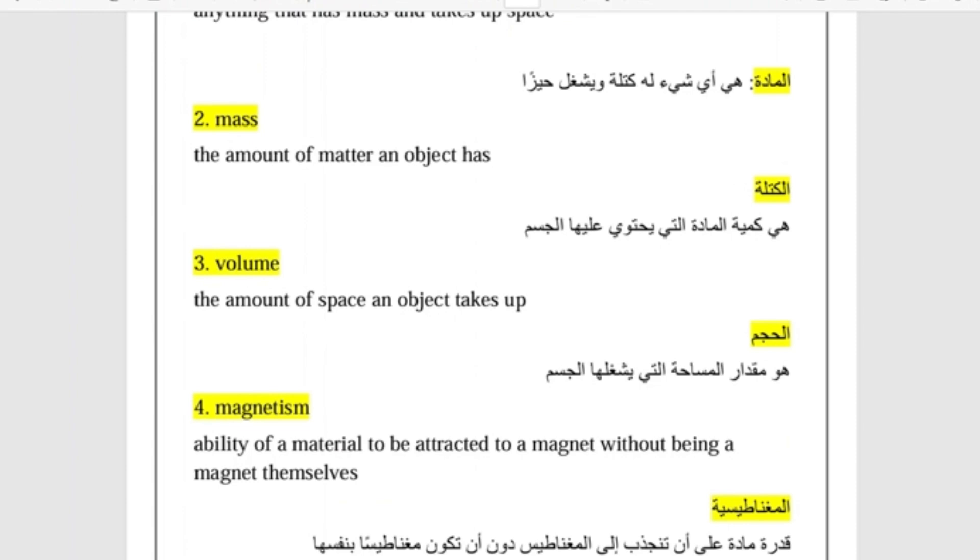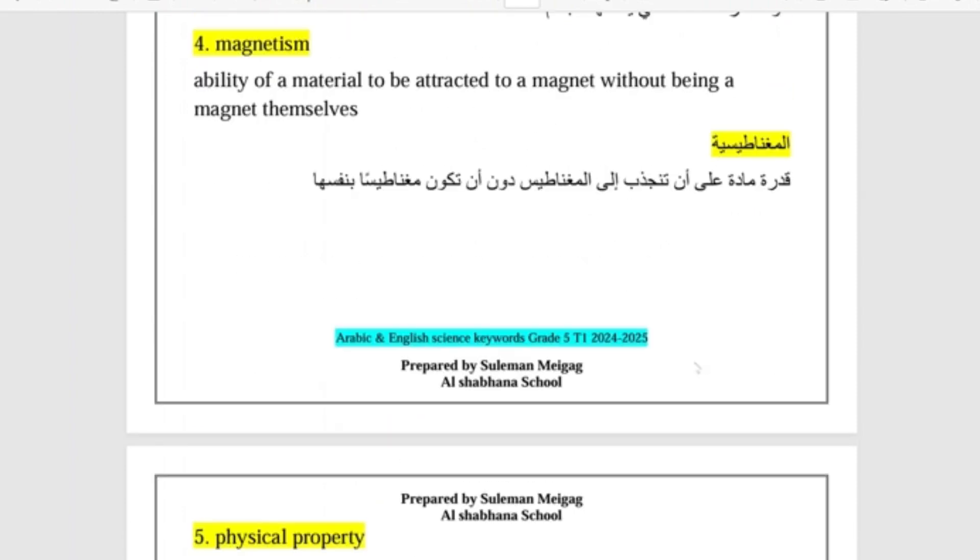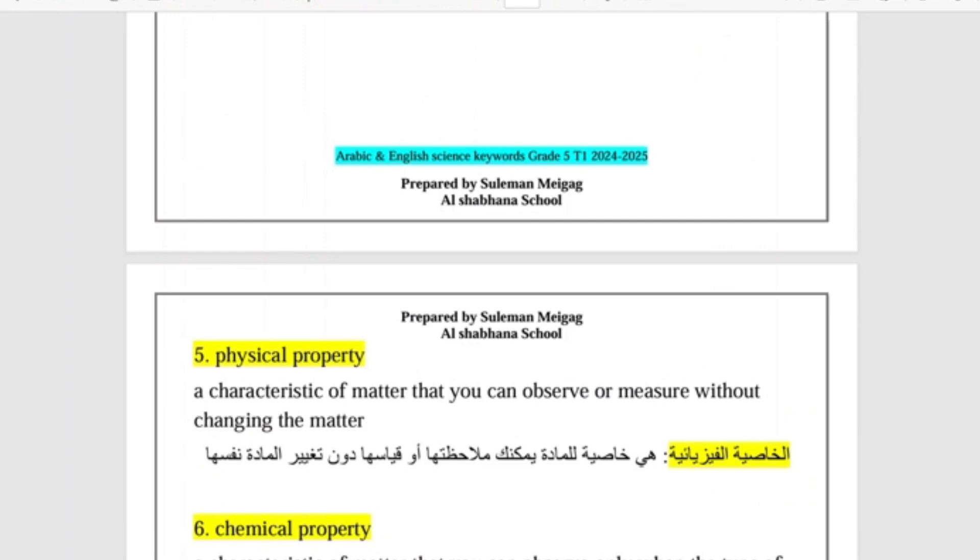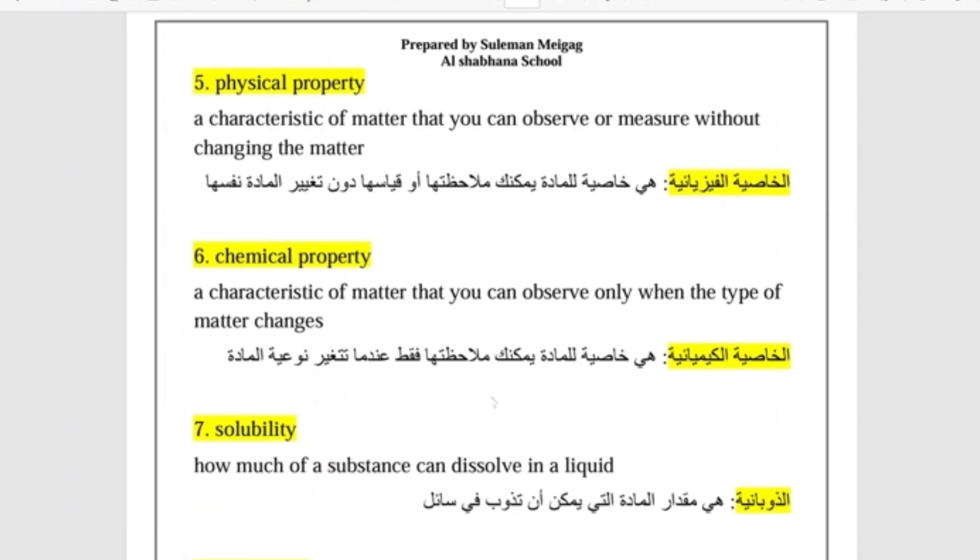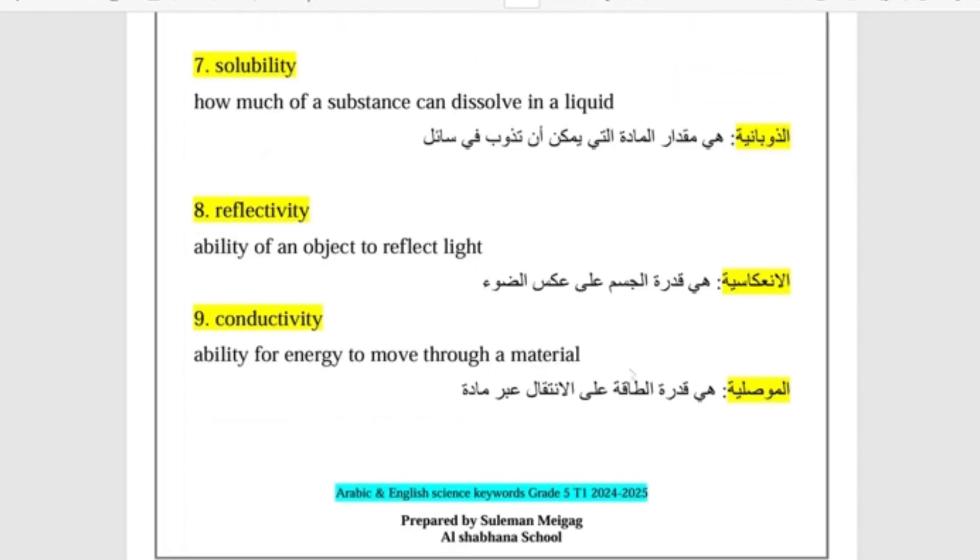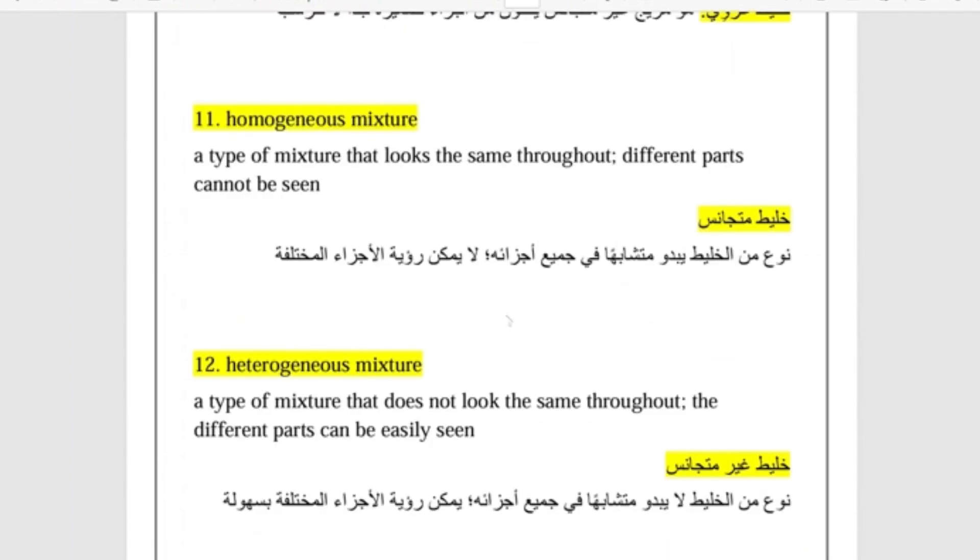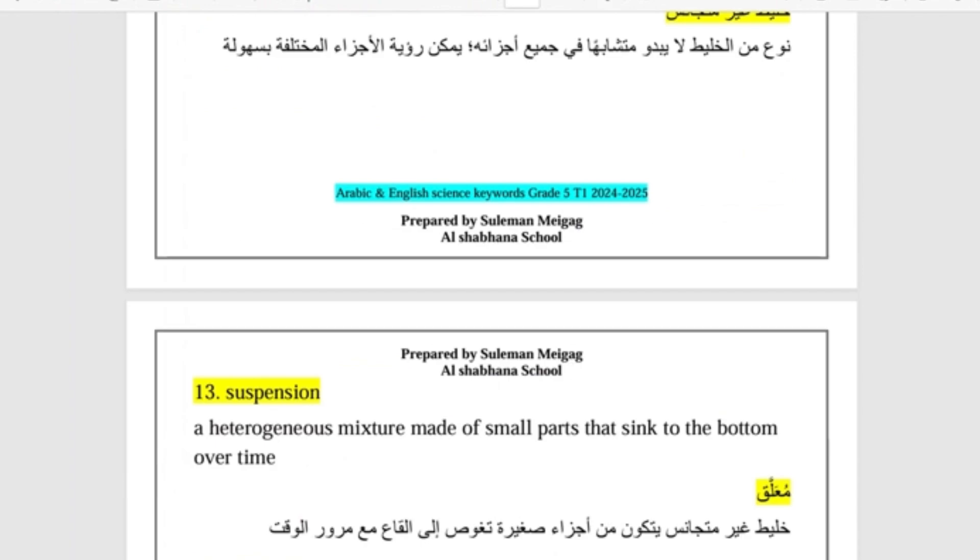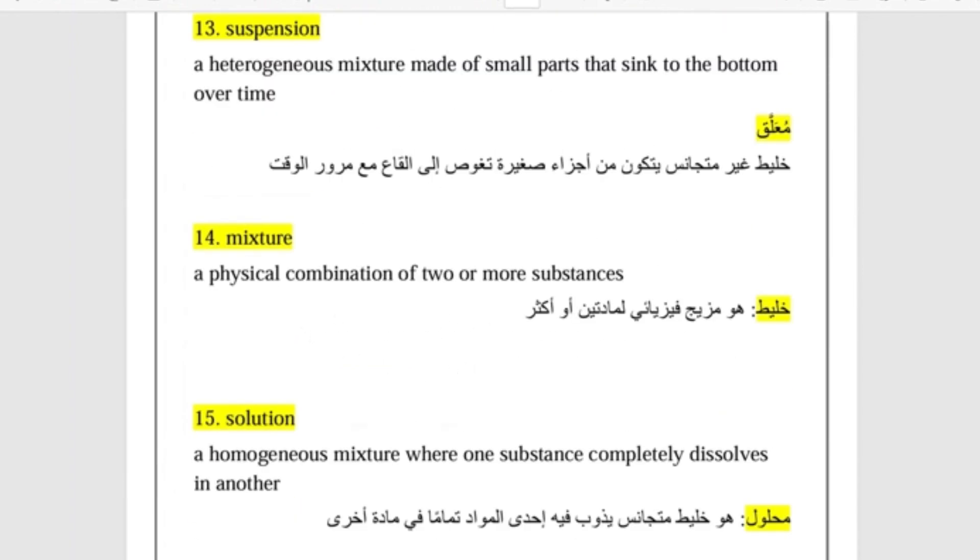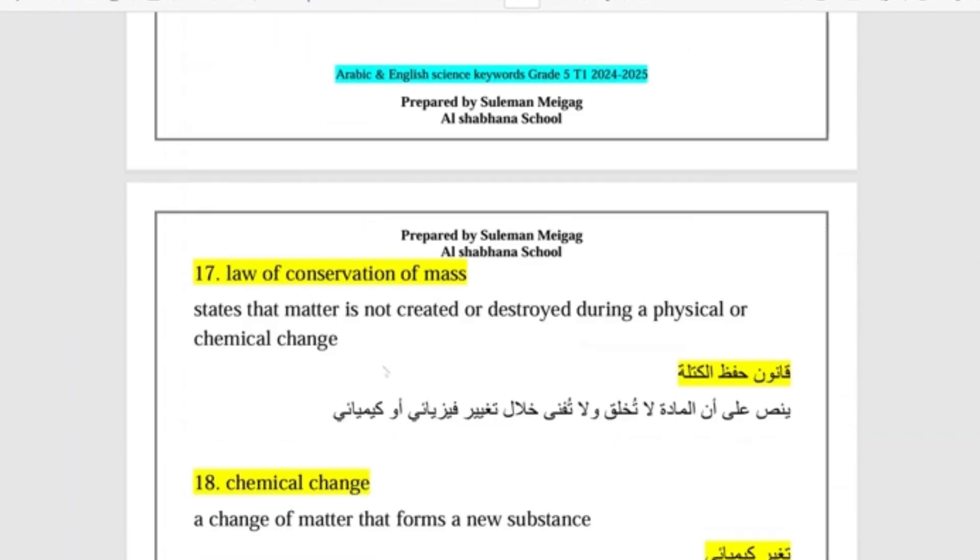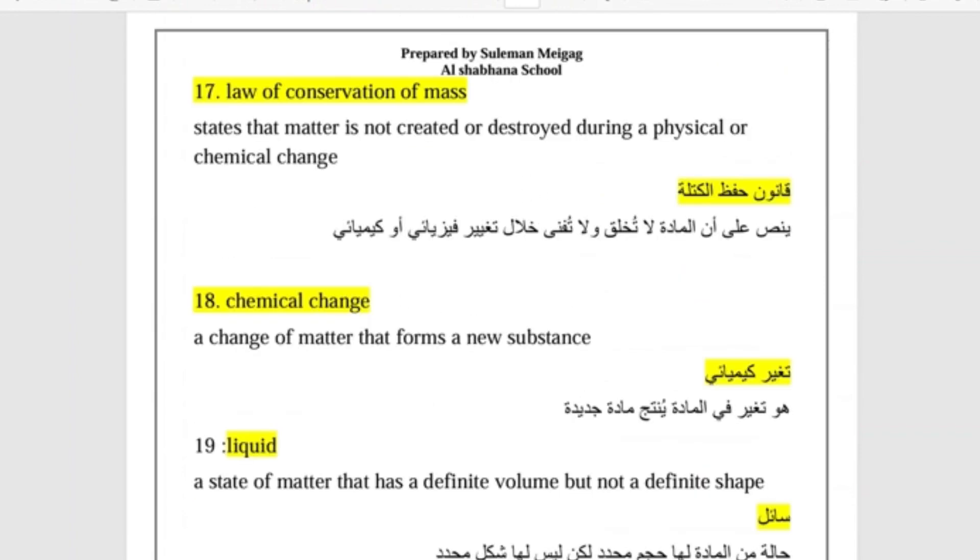So here you see matter, mass, volume, magnetism, physical property, chemical property, solubility, reflectivity, conductivity, colloid, homogeneous mixture, heterogeneous mixture, suspension, mixture, solution, physical change, law of conservation of mass. This is the law we were talking about, the law mass before equal mass after. It is here translated for you. So you use Book 1.